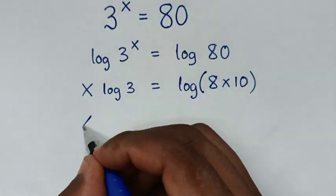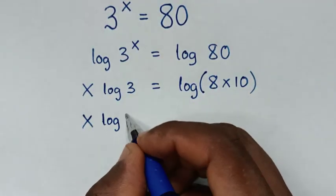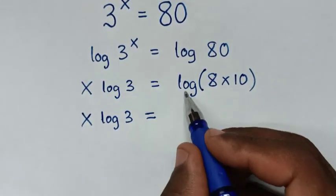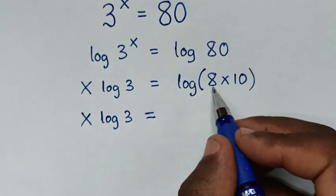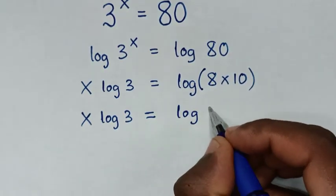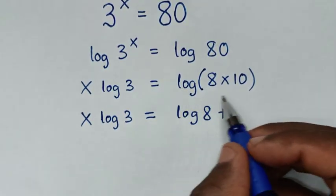Then it will be x log of 3 is equal to log of 8 times 10, same as log of 8, plus log of 10.